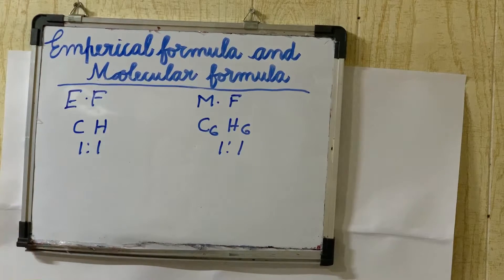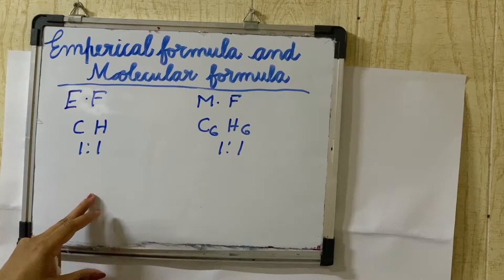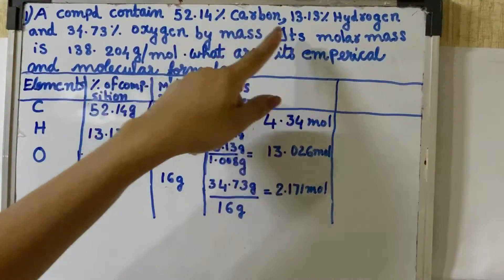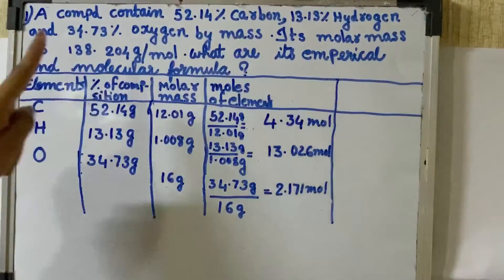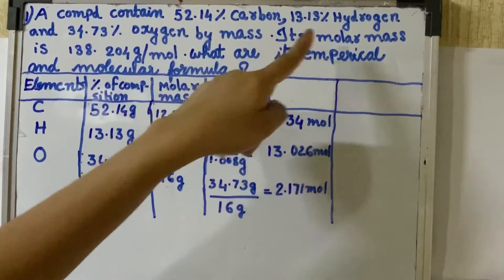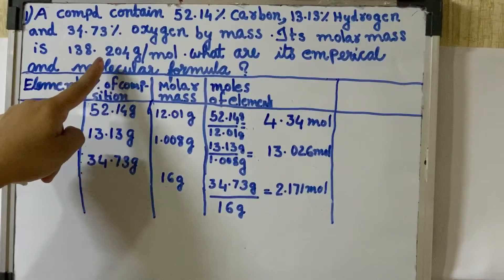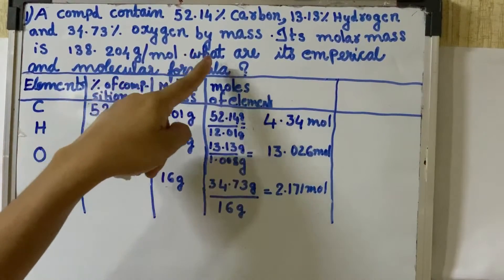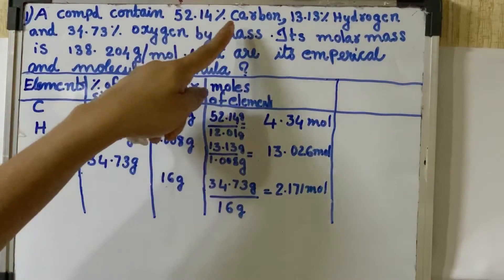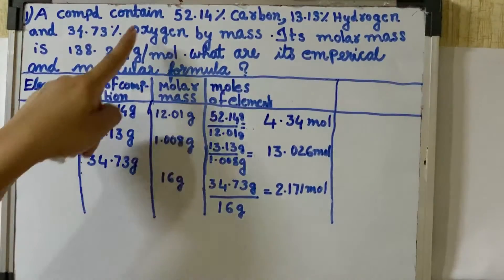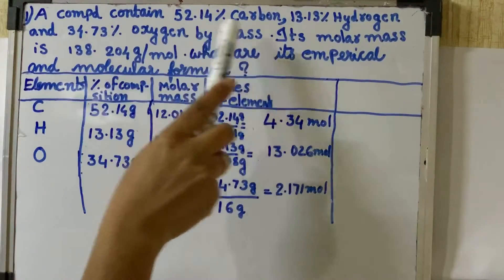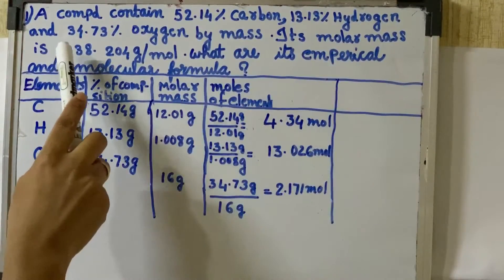How do we derive the empirical formula and molecular formula? Example: a compound contains 52.14% carbon, 13.13% hydrogen, and 34.73% oxygen by mass. Its molar mass is 138.204 grams per mole. What are its empirical and molecular formulas? The elements are carbon, hydrogen, and oxygen, with mass percentages of 52.14, 13.13, and 34.73.